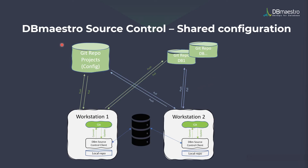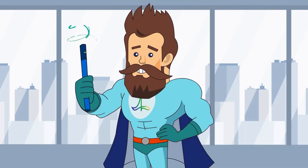The architecture diagram for a shared project is similar to a sandbox project. There is a git projects repository that holds the project information, a database repository, and workstations — but the only difference is that all workstations share a single physical database.